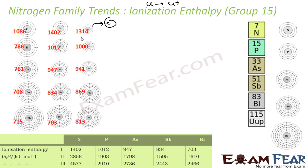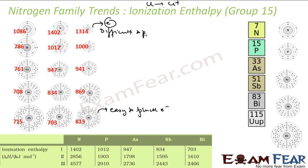This value decreases down the group. Why? Because the size increases — it becomes easy to pluck an electron. The nucleus does not have much control on the outer electron, so it is easy to remove. But for oxygen, it is difficult to pluck an electron because the size is small and the oxygen nucleus has more control on the electron.